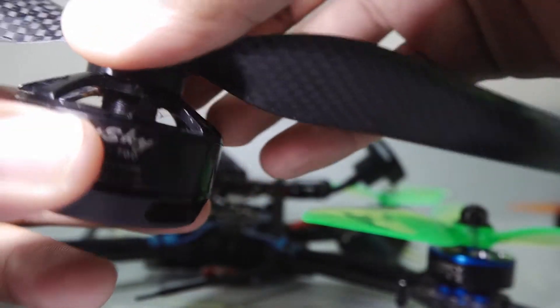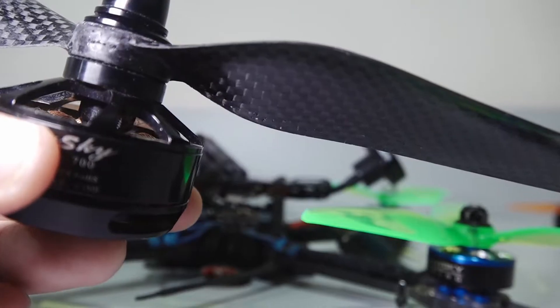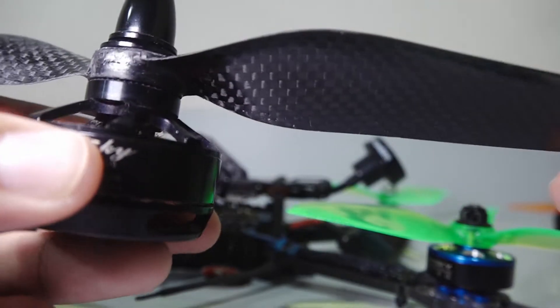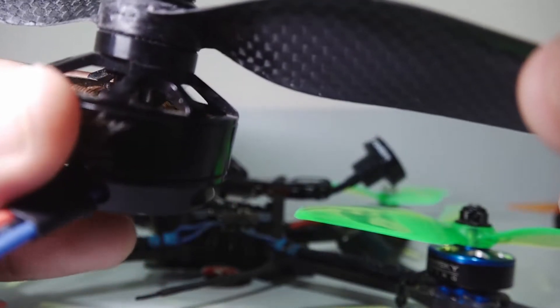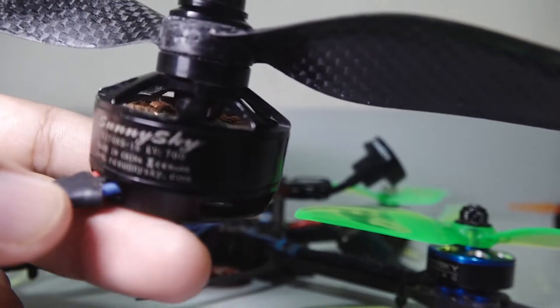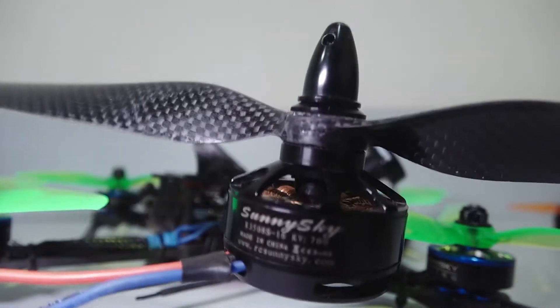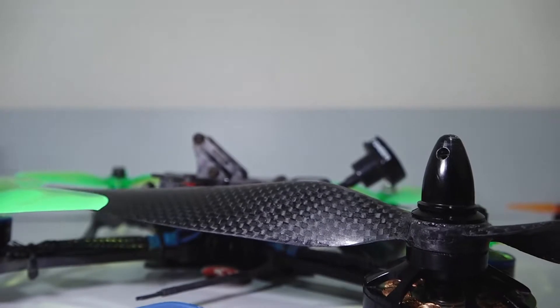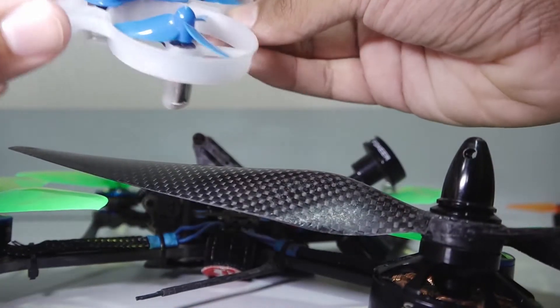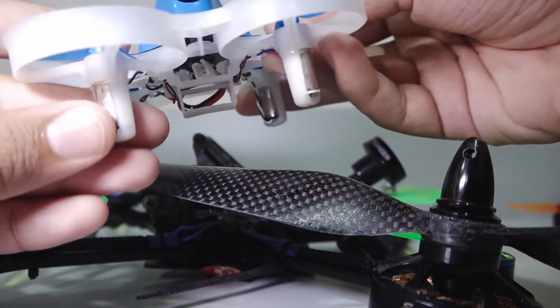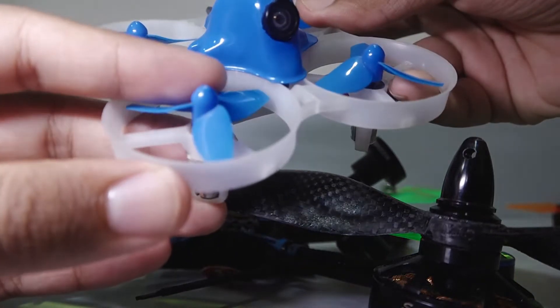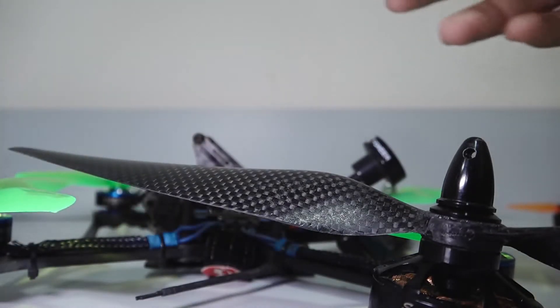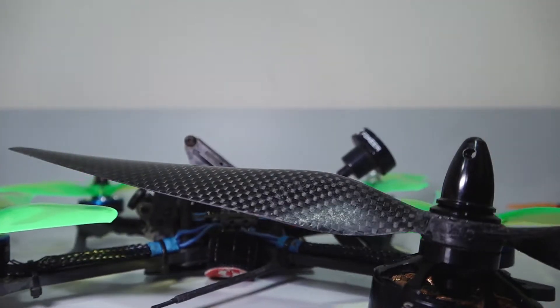There are also brushed motors available, but they have a brush mechanism that tends to break after some time, so we don't use them much in RC applications. They tend to be useful in smaller drones like that.